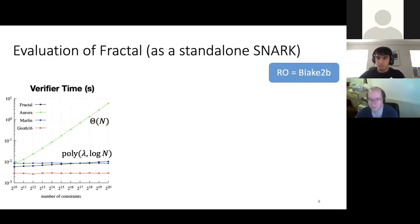And here I've plotted fractal, Aurora, Marlin, Groth. Aurora is a state of the art post-quantum snark for circuits. Marlin, Groth are pairing-based snarks. So we see that Aurora has a linear verifier time, whereas fractal has a logarithmic one. So we've got an exponential improvement in verifier time due to preprocessing. And the constants for verifying this fractal proof are quite good. They're in the same regime as Marlin and close to Groth, around 10 milliseconds.